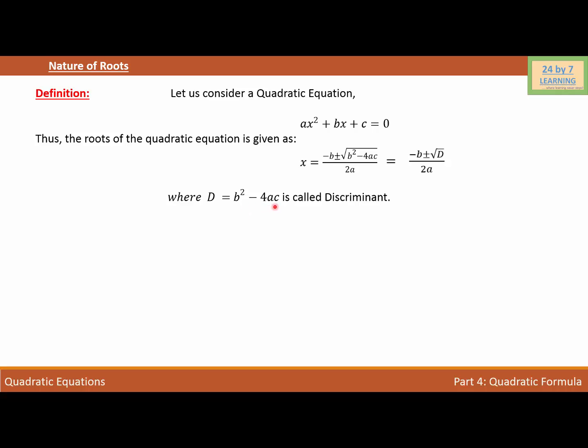There are three cases based on the nature of the discriminant. Case 1: If b² minus 4ac is greater than 0, then the two roots are real and distinct. It means that when the discriminant is greater than 0, the roots are real and they are different.